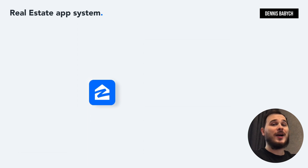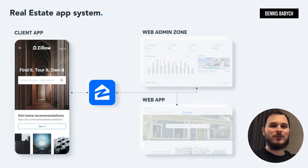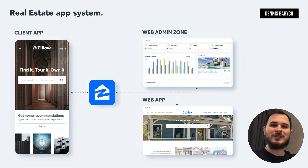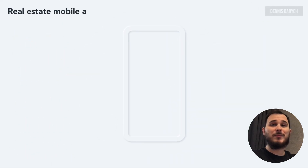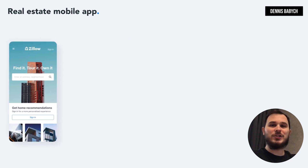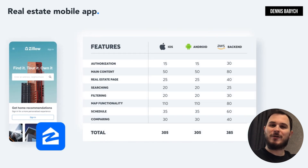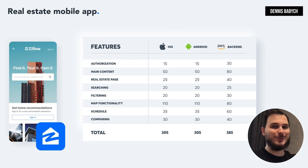Let's start by identifying the real estate app system and its main components. The Zillow system consists of mobile applications for both iOS and Android, a web-based app and the web admin zone. Within the mobile app you can have features such as home discovering, comparing real estate, filtering your searches, map functionality with bells and whistles, apartment detailed page, tour schedule and more.